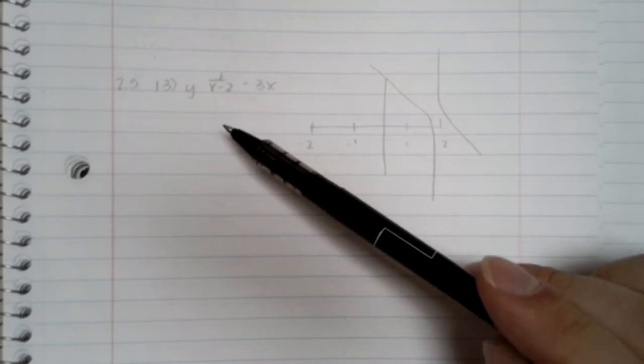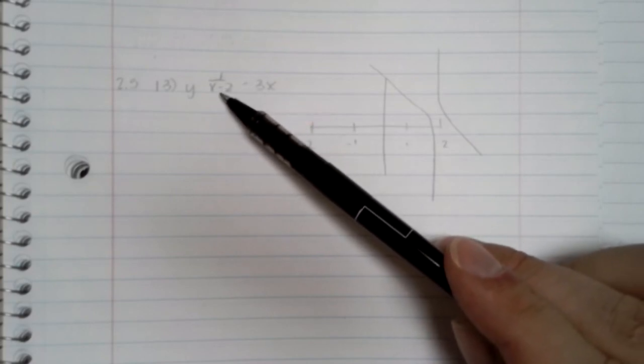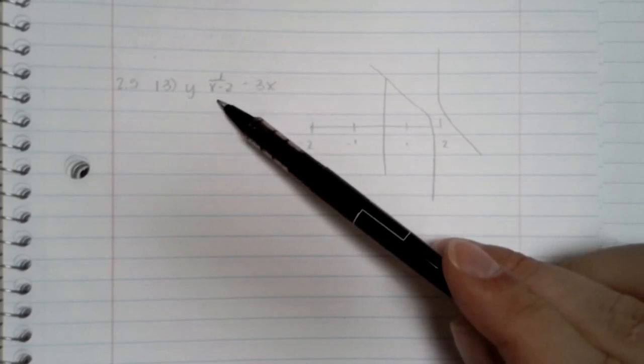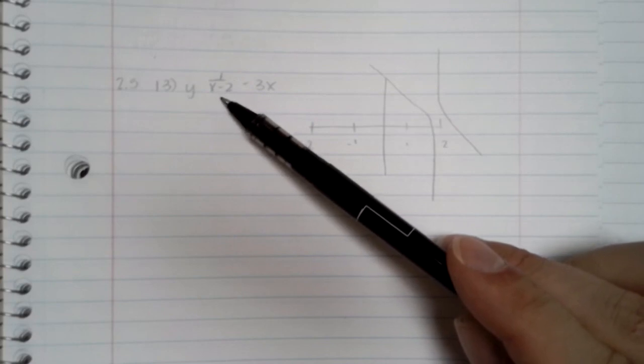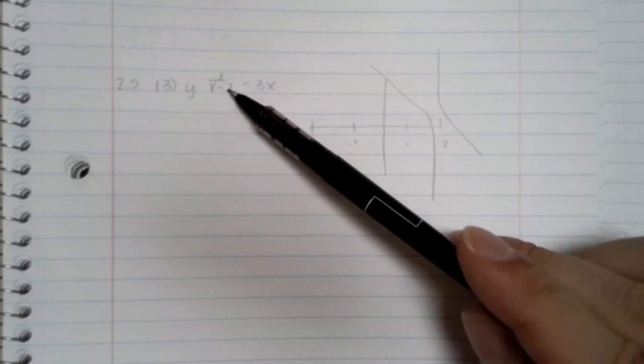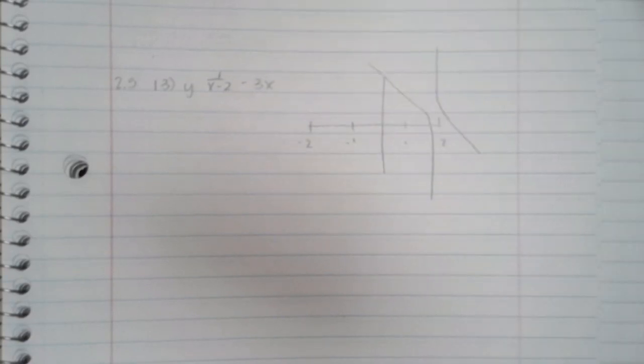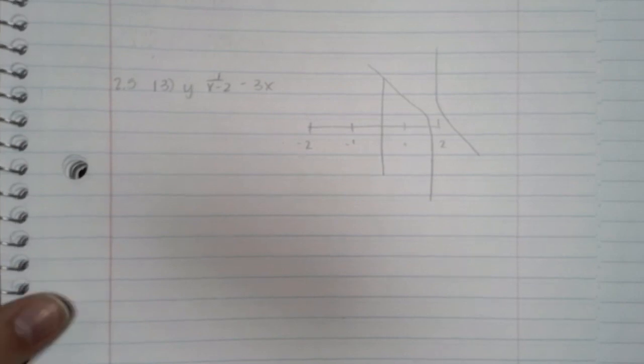So where would it not be continuous? Well, we see this division by x minus 2, and we recognize that 2 gives us a division by 0, so it can't be continuous at 2. So that's it. Thank you.